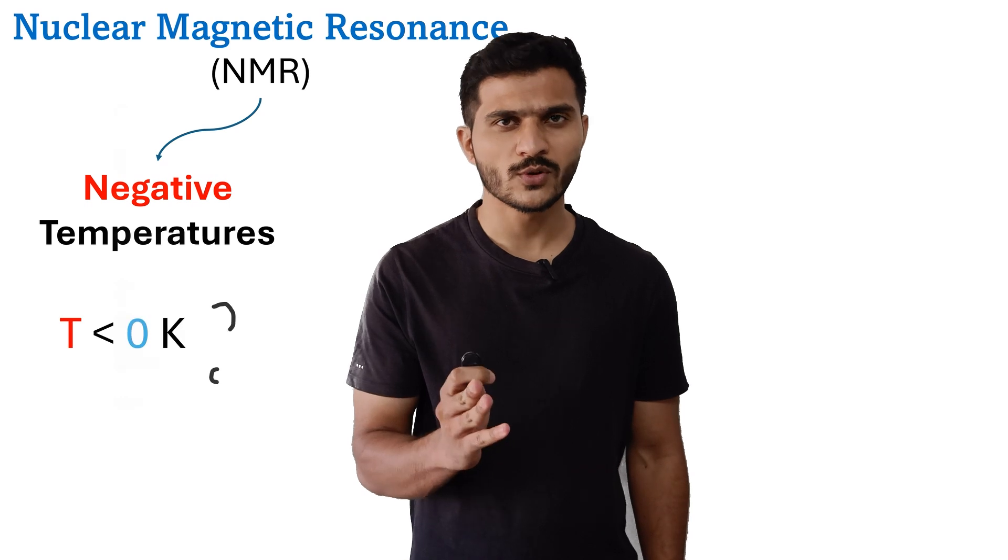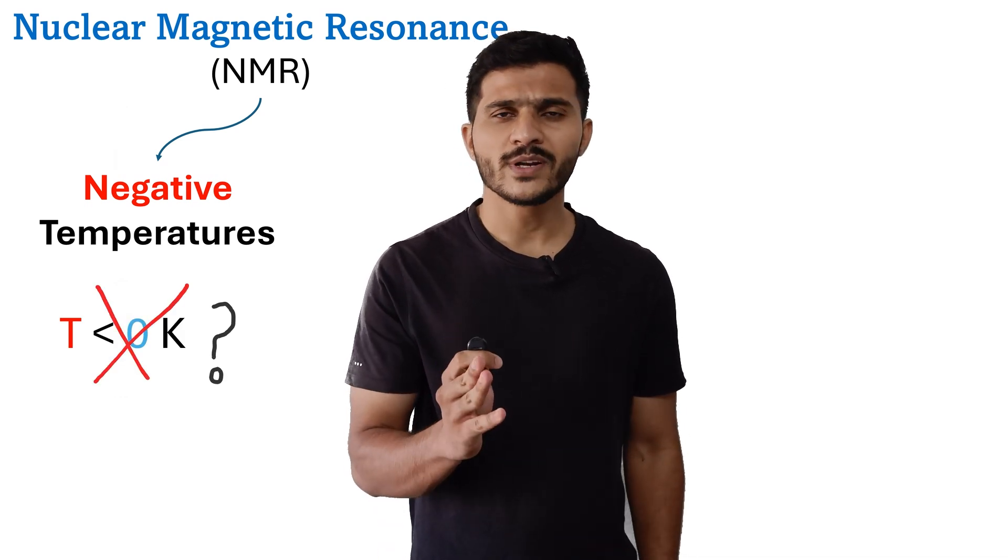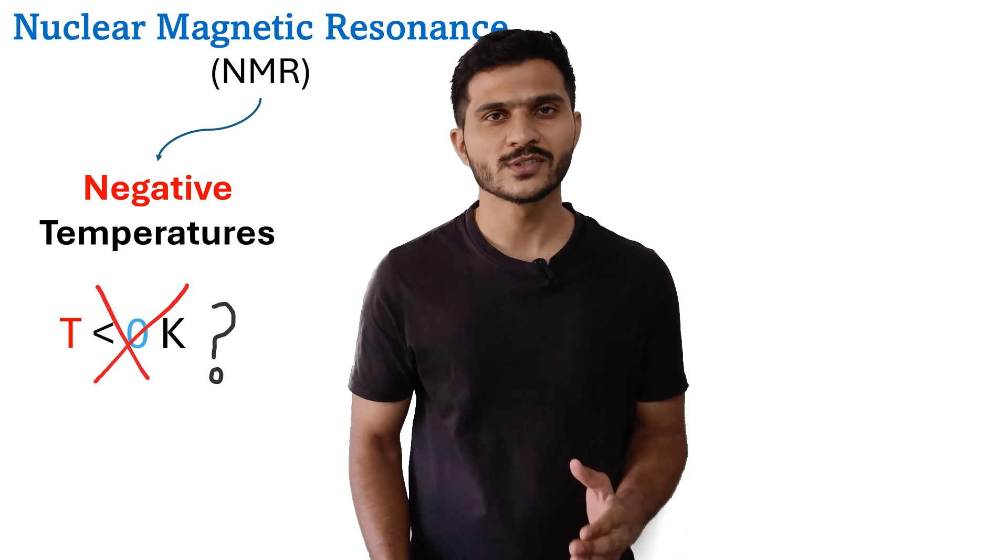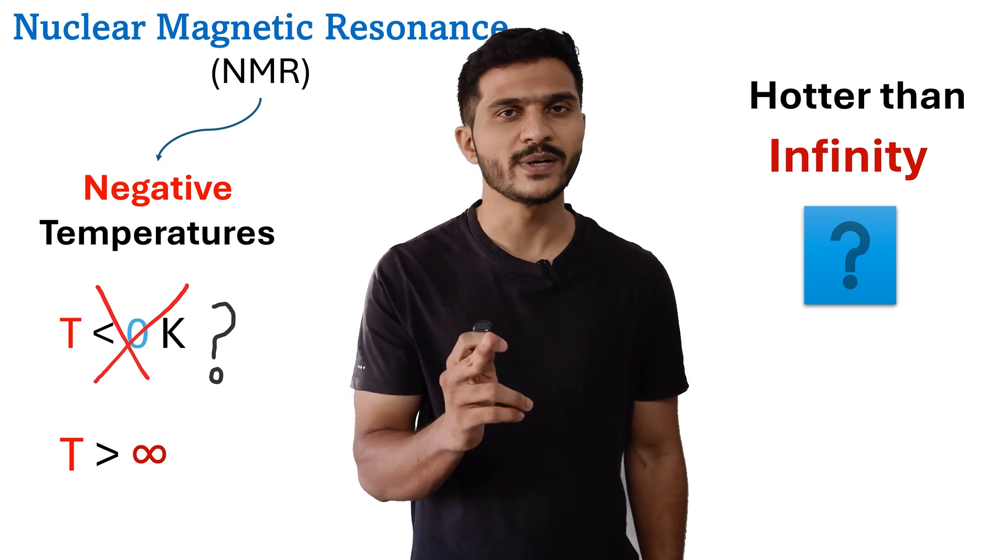Is it even possible to go below zero Kelvin? Simple answer to this is no. Negative temperatures in fact are the temperatures which is hotter than infinities. But how? Let's get to these questions in a bit time.